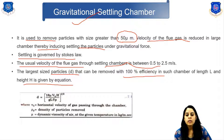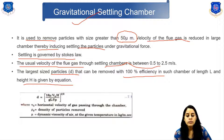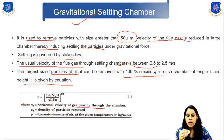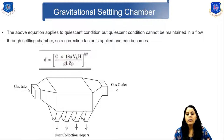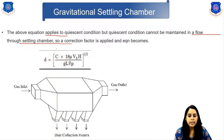The largest particle size D that can be removed is given by the equation: D equals the square root of 18 mu times VH times H, divided by rho_L times rho_P. Where VH is the horizontal velocity of the gas passing through the chamber, rho_P is the density of the particle being removed, and mu is the dynamic viscosity of air at the given temperature in kg per meter per second.